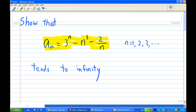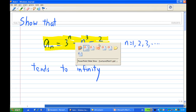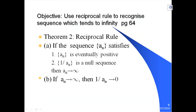Now, in order to do this, I need to quote a result which is called the Reciprocal Rule for sequences. The Reciprocal Rule for sequences can be found in David Brennan's book, page 64. We say that if a sequence a_n satisfies two conditions: number 1, a_n is eventually positive; number 2, 1 over a_n is a null sequence — then a_n tends to infinity.